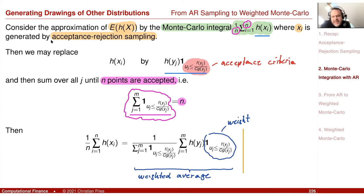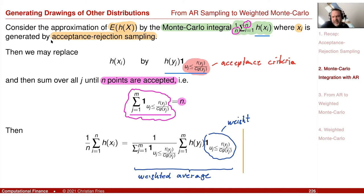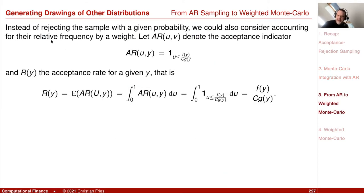Note that the sequences uj and yj are independent. We could consider the case where yj is fixed for, say, 100 points and we sample 100 different u's. That means we are calculating the acceptance rate. The weight multiplied with h(yj) is the probability of accepting the point.